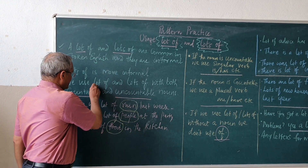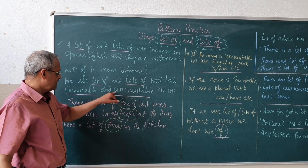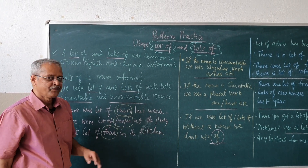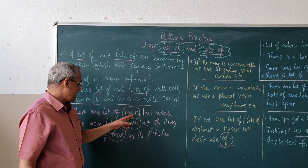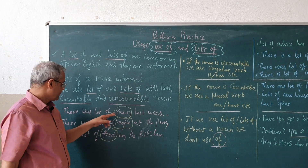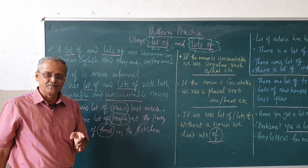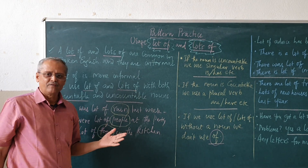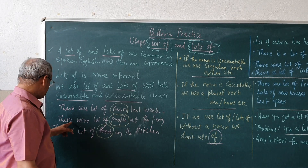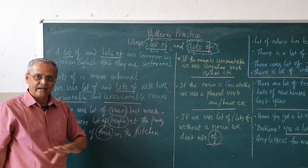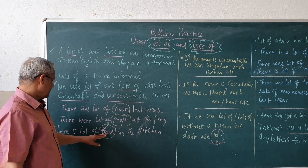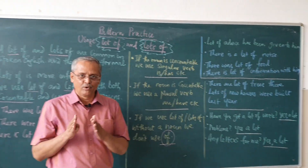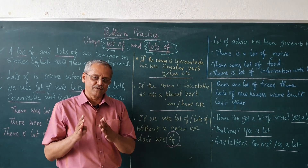We use 'lot of' and 'lots of' with both countable and uncountable nouns. For example, with uncountable nouns: 'There was a lot of rain last week' — 'rain' is uncountable. With countable nouns: 'I have a lot of friends,' 'I have a lot of story books in my house,' 'I have a lot of relatives in Chennai.' Also: 'There were a lot of people at the party' — uncountable — and 'There is a lot of food in the kitchen' — also uncountable.